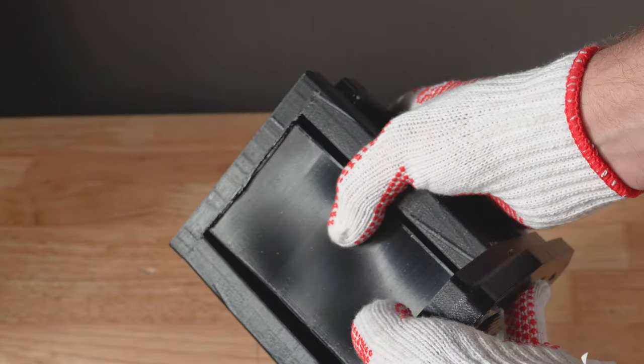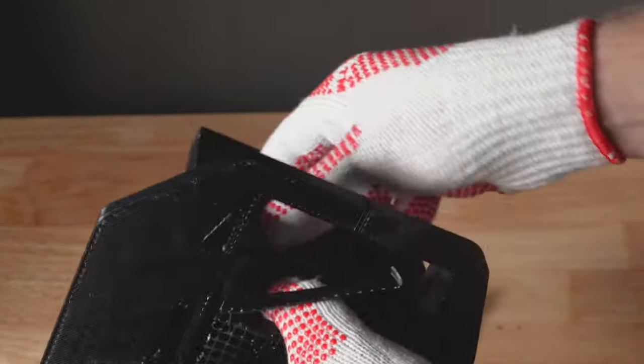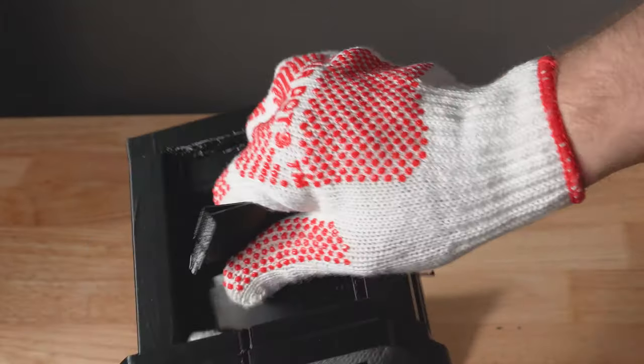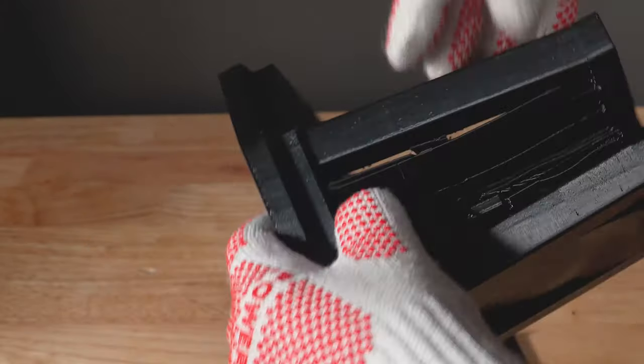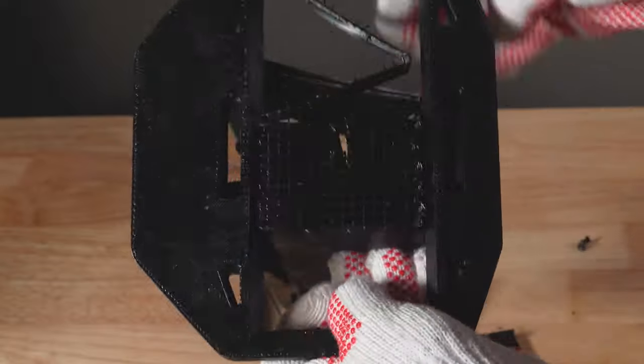After printing the part, check it for inconsistencies, blemishes, defects, cracks, or any other errors. Remove support material and clean up the mating points between the supports and the part. For detailed parts, you can use tweezers or needle nose pliers to get into tight areas. Make sure to wear gloves as the broken plastic pieces can be sharp.